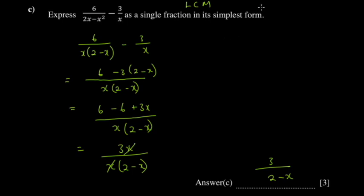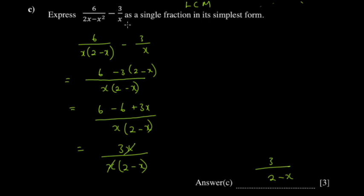Someone else might have written x(2x minus x²) as the common denominator - that's still technically correct. But then you struggle when simplifying because you've created squared terms that need further simplification. It can get cumbersome, so the factorized method is the simpler way to do it.